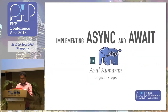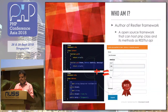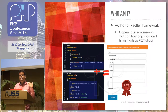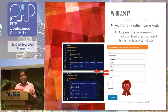I'm the author of the RESTler Framework, which is an open source framework. You can write a PHP class and define some public and protected methods. Once you hook that up with the framework, it will become a web API — a RESTful API that you can consume.